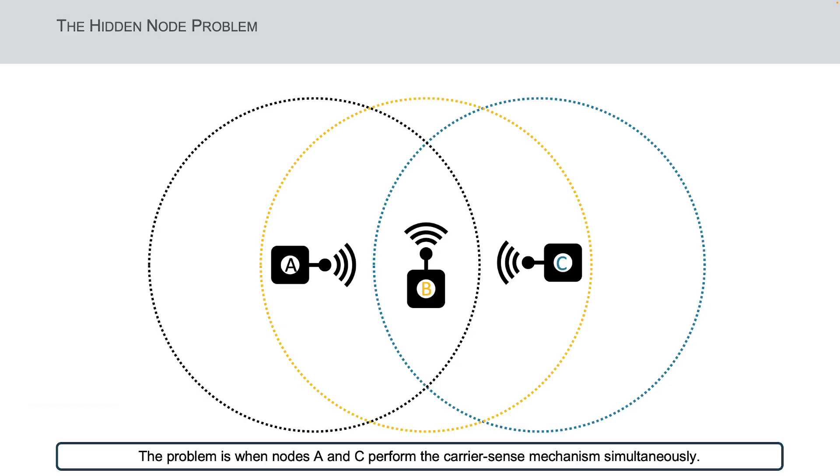The problem is when nodes A and C perform the carrier sense mechanism of CSMA simultaneously to detect that the shared channel is idle, and start to transmit frames to the common destination node B. Because nodes A and C cannot receive each other's signals, thus they cannot detect the collision before or while transmitting, a collision will occur, and as a result node B receives corrupted frames.